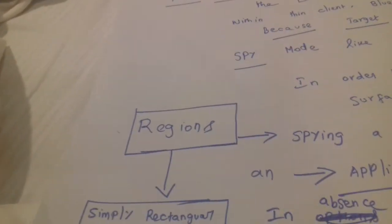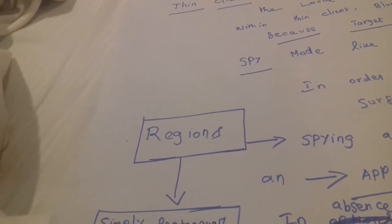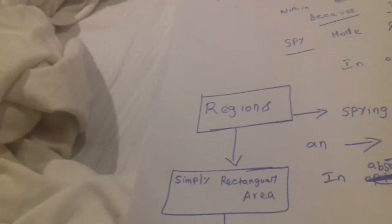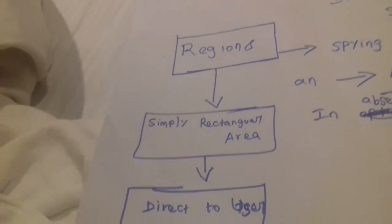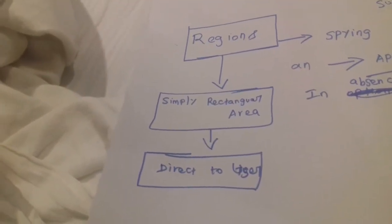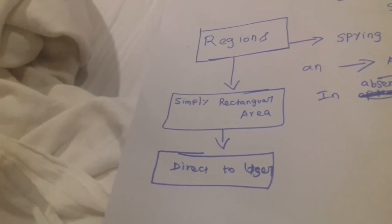When we go for surface automation in thin client, we have to talk about regions. Regions is the region mode within surface automation. This is simply a rectangular area whenever we capture with the application model or studio.